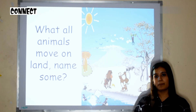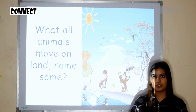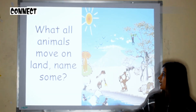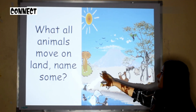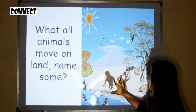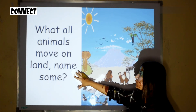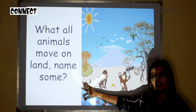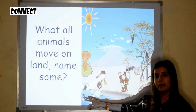We connect the students first by asking different probing questions for tinkering their minds. Such as in this slide you can see we are having different animals, and we have asked what are the animals who move on land. Children will give some examples of land animals.